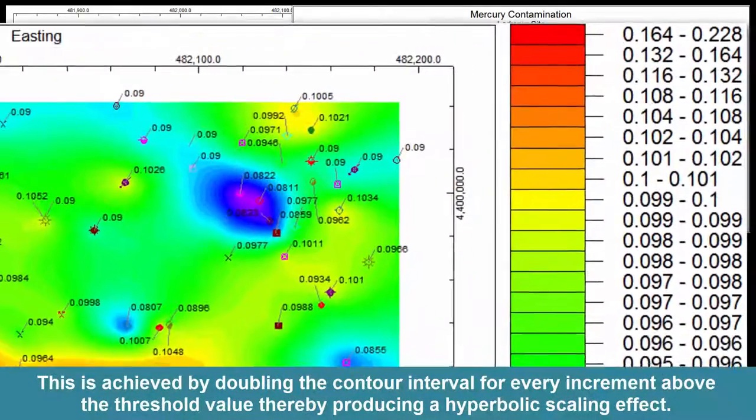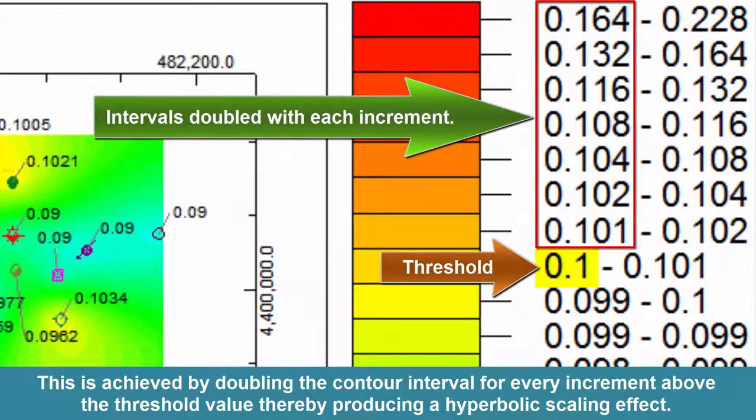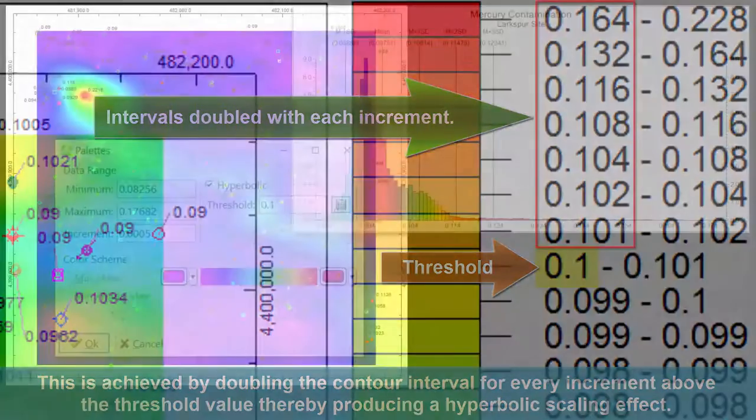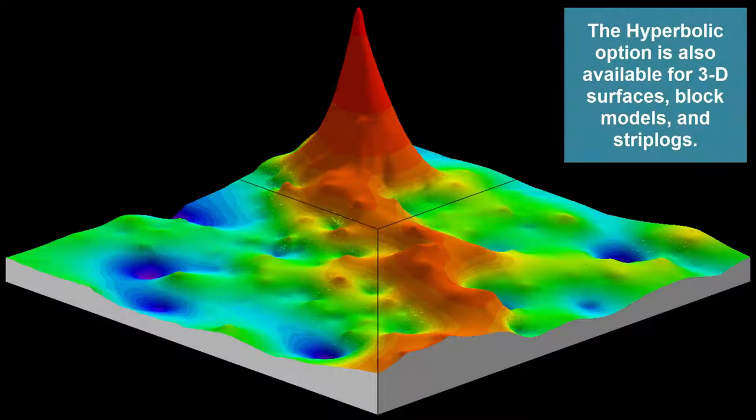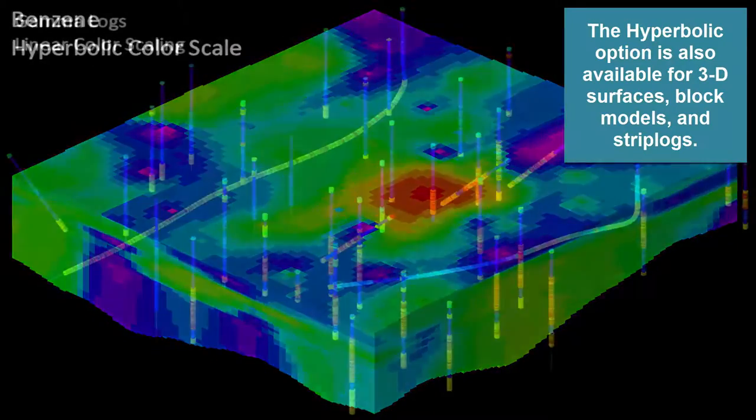This is achieved by doubling the contour interval for every increment above the threshold value, thereby producing a hyperbolic scaling effect. The hyperbolic option is also available for 3D surfaces, block models, and strip logs.